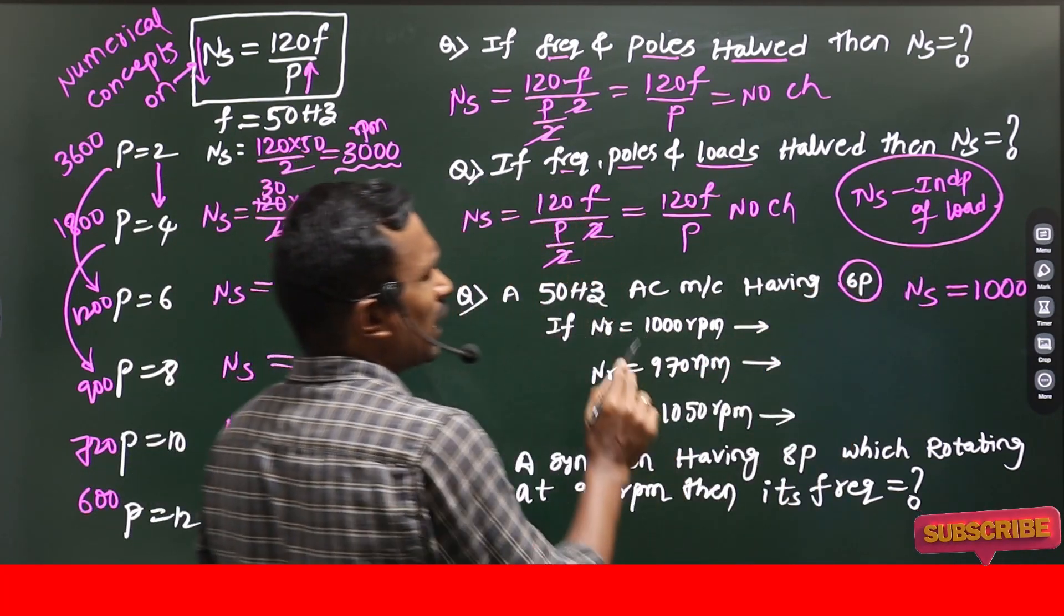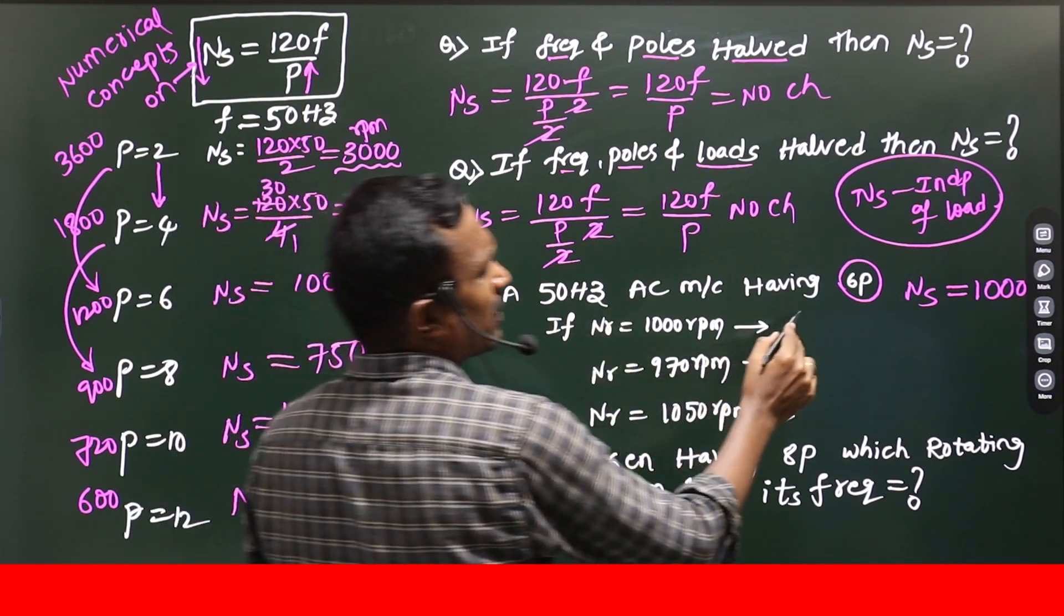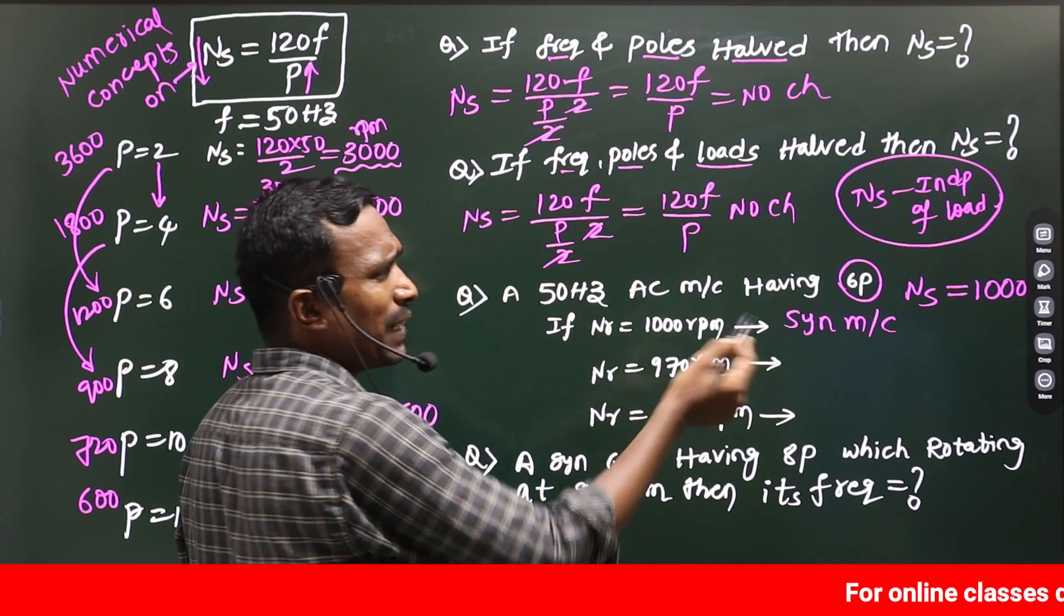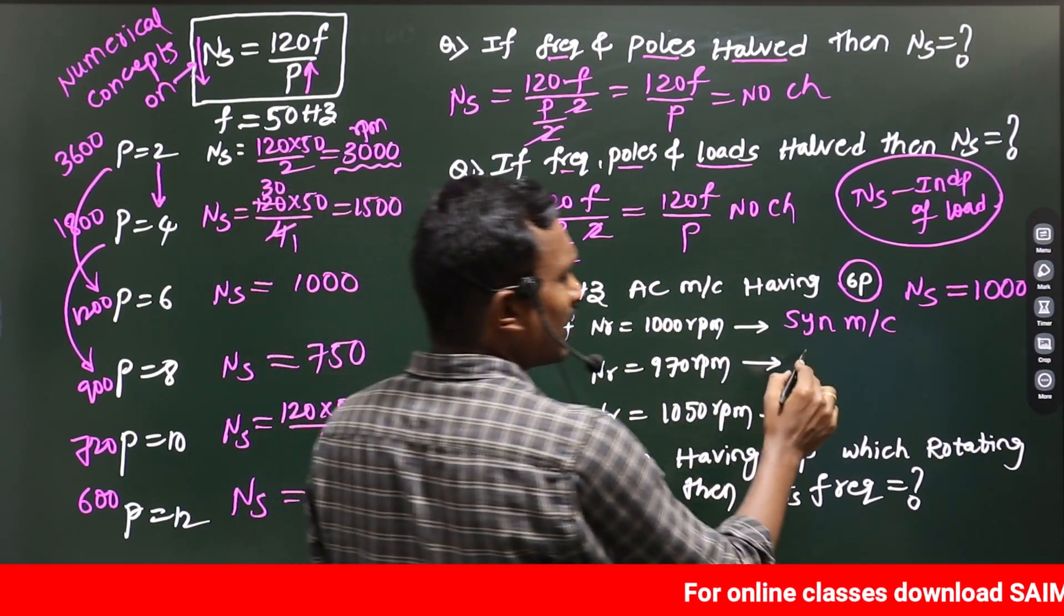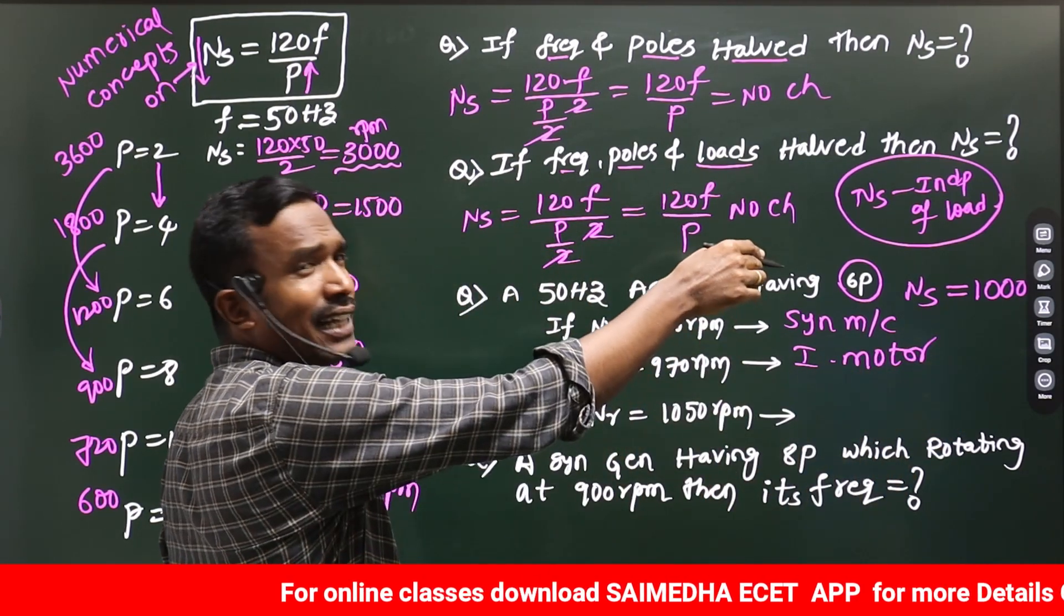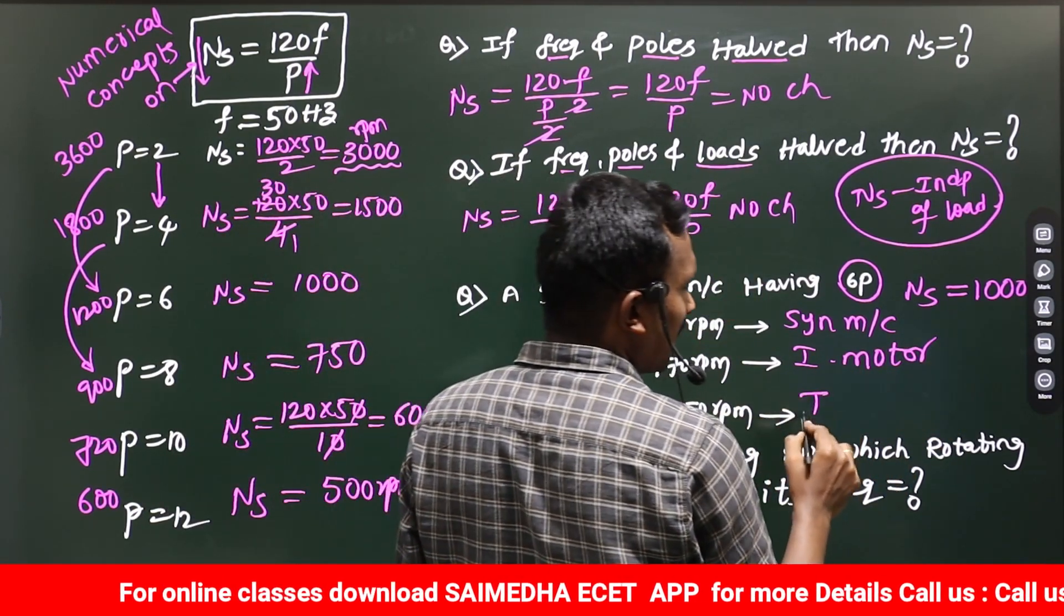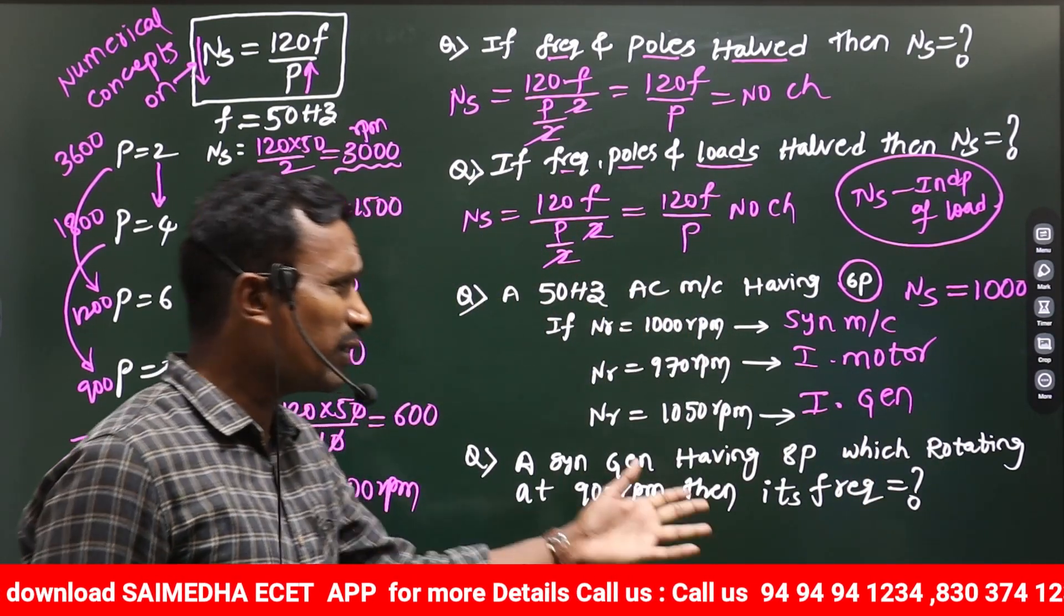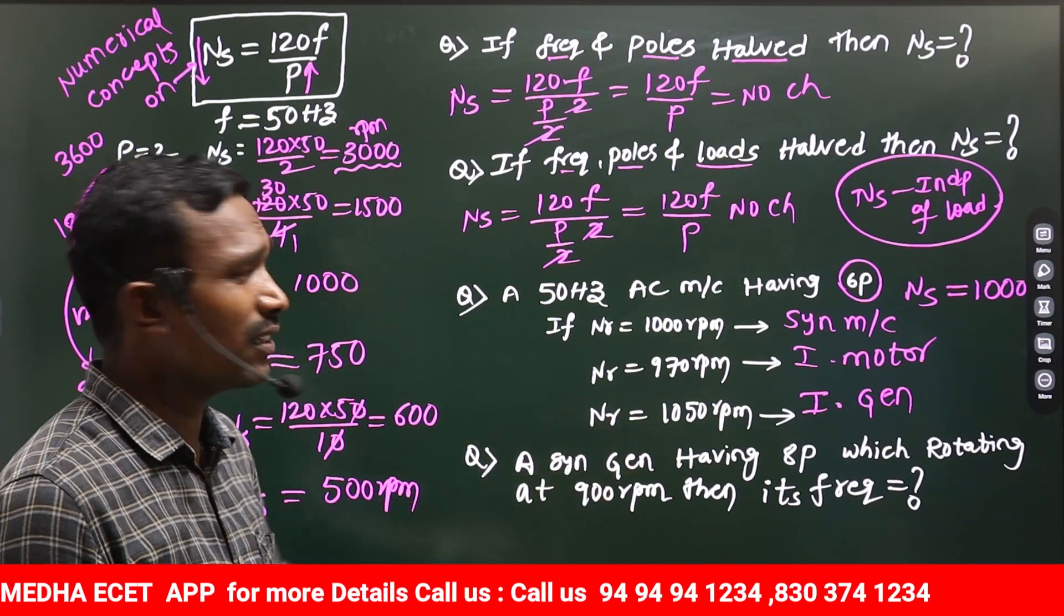So, synchronous speed 1000. If the rotor speed also 1000, that is called synchronous machine. If the rotor speed less than 1000, that is called induction motor. If the rotor speed greater than synchronous speed, that is called induction generator. That's very simple. You can calculate easily.